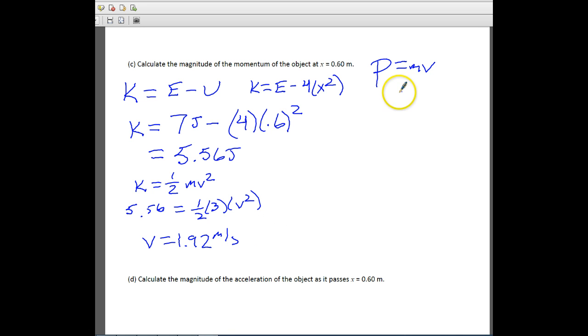Now that we've done that, we can go up to our equation for momentum, and our momentum is equal to the mass, which was 3 times our speed at that point, which is 1.92 meters per second, and so we end up with 5.8 kilograms times a meter over a second, and that is your answer for part C.